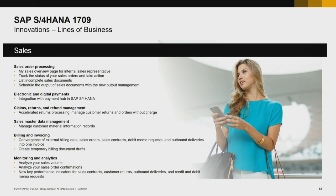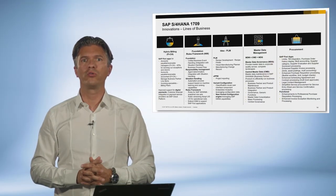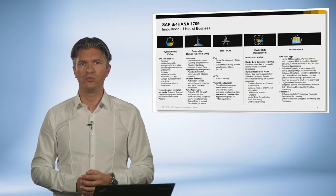A second example in sales would be electronic and digital payment. It gives you the ability to integrate with Digital Payment Hub and S4HANA. In sales order processing, we give you a new app to check the completeness of your sales document with the new Fiori app List Incomplete Sales Orders. And of course, we have some more innovations for you.